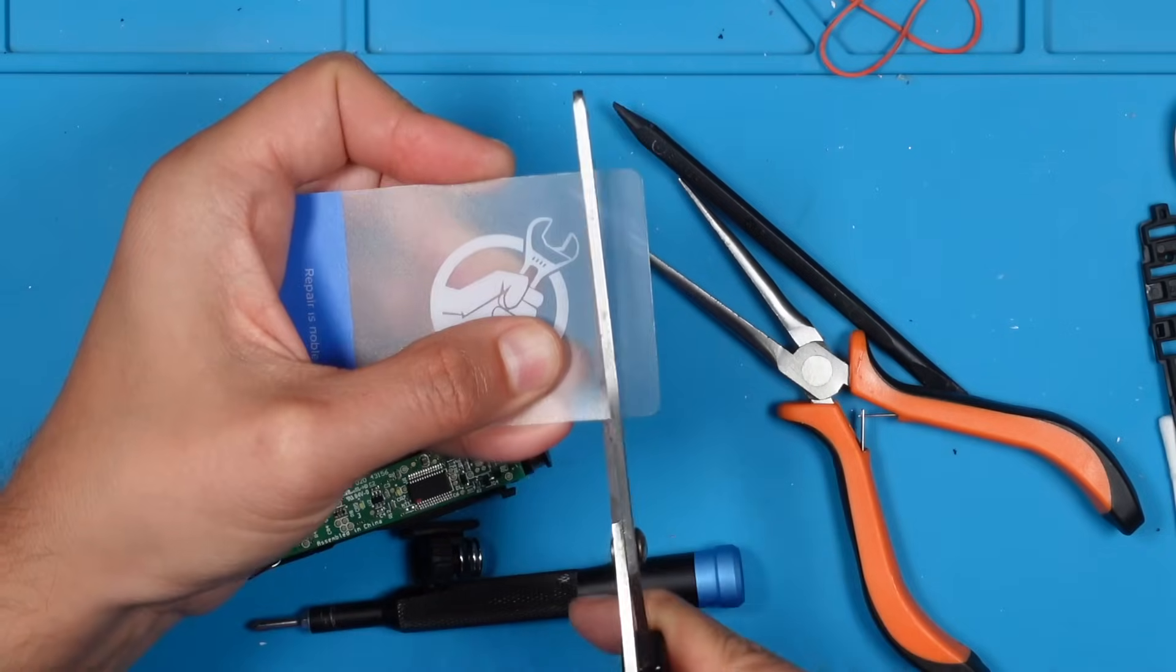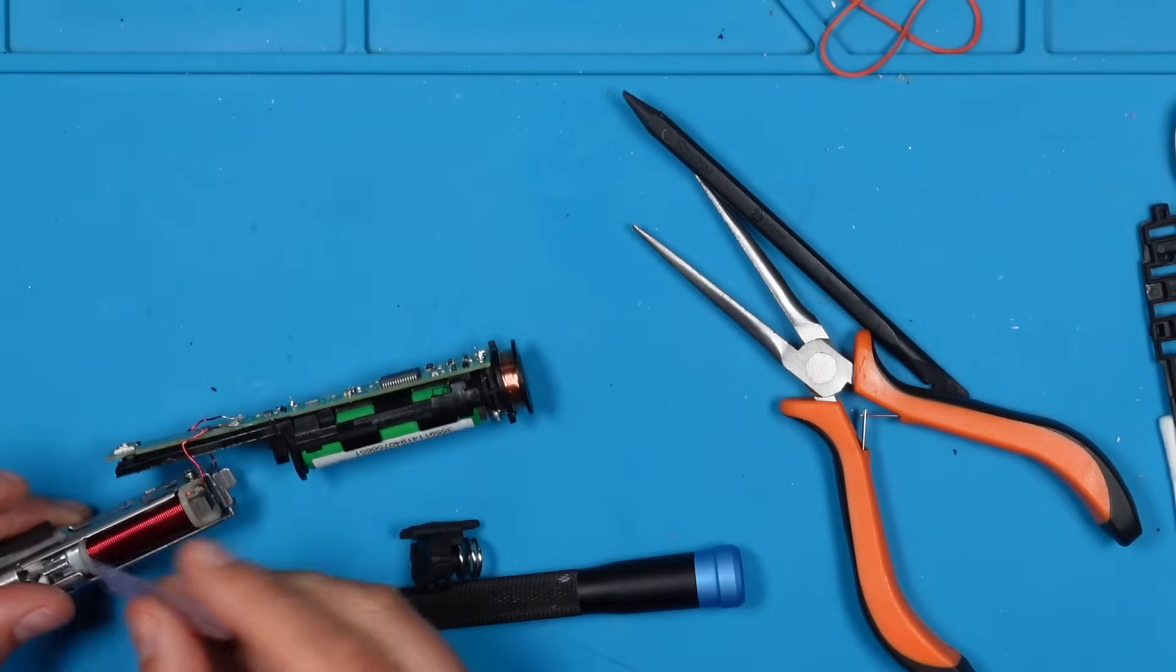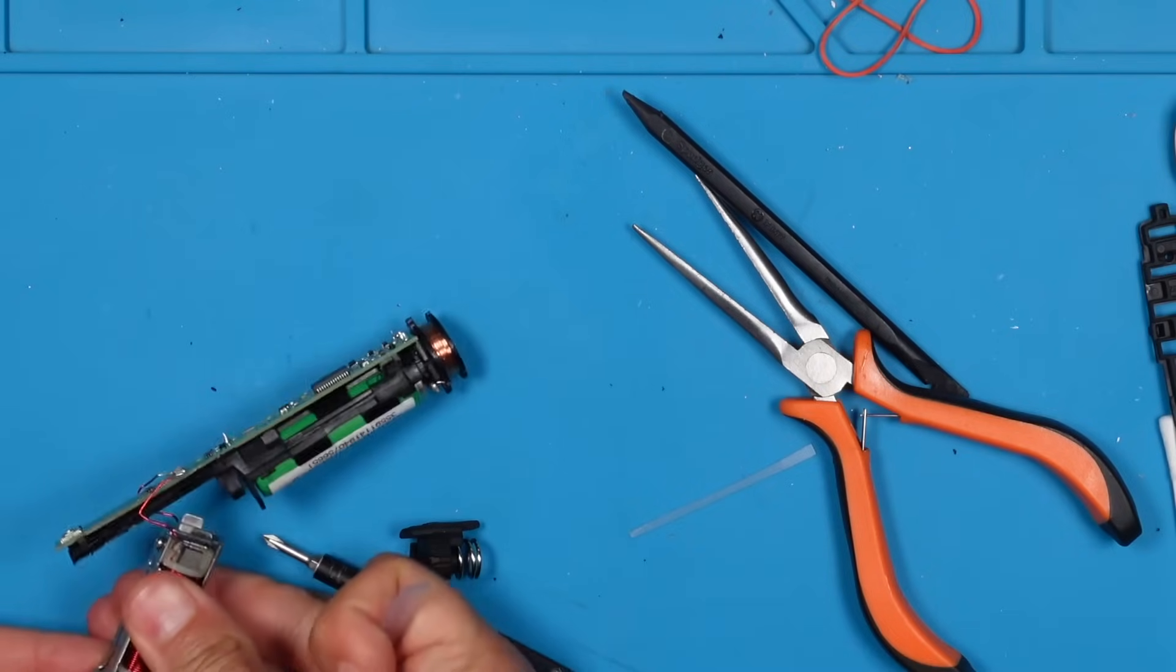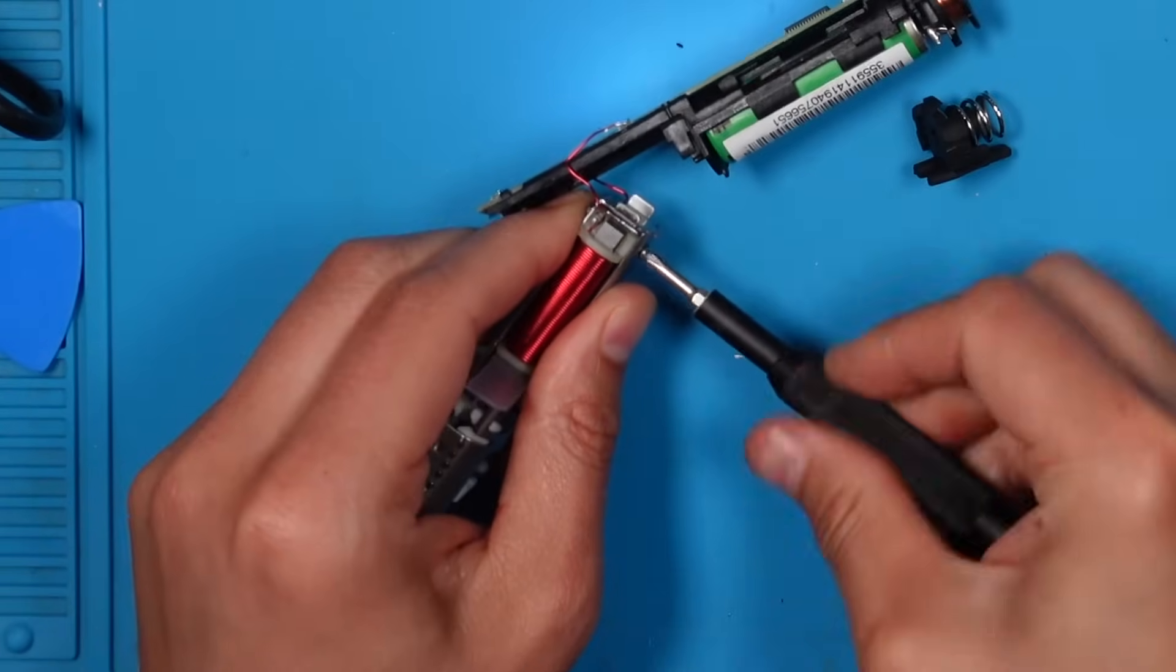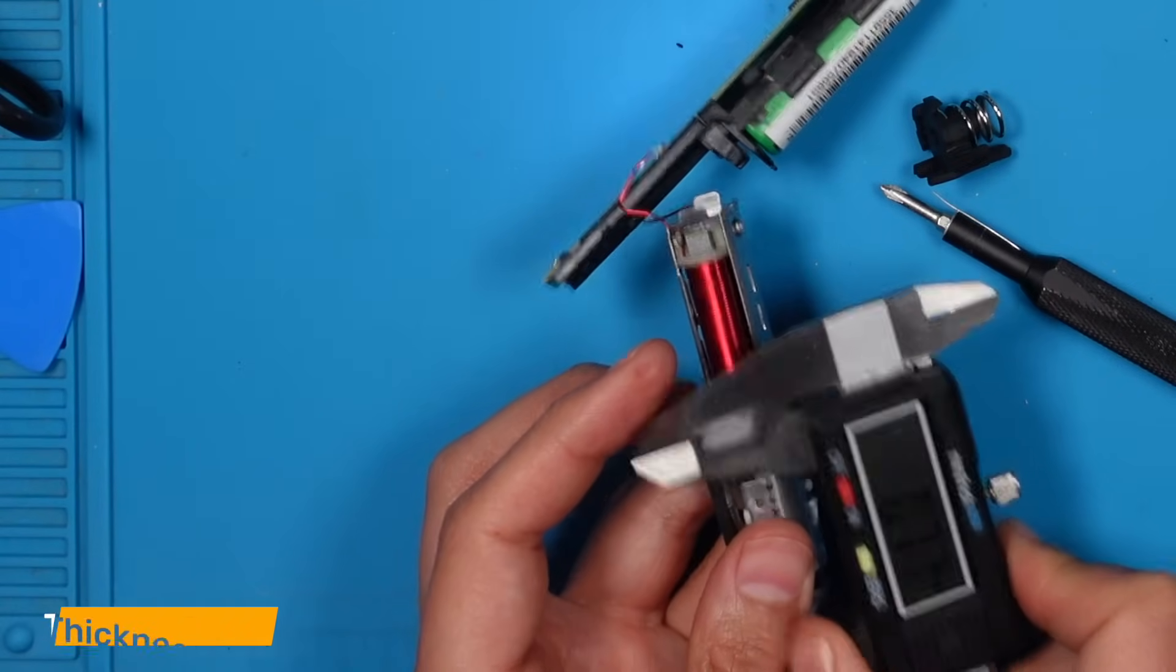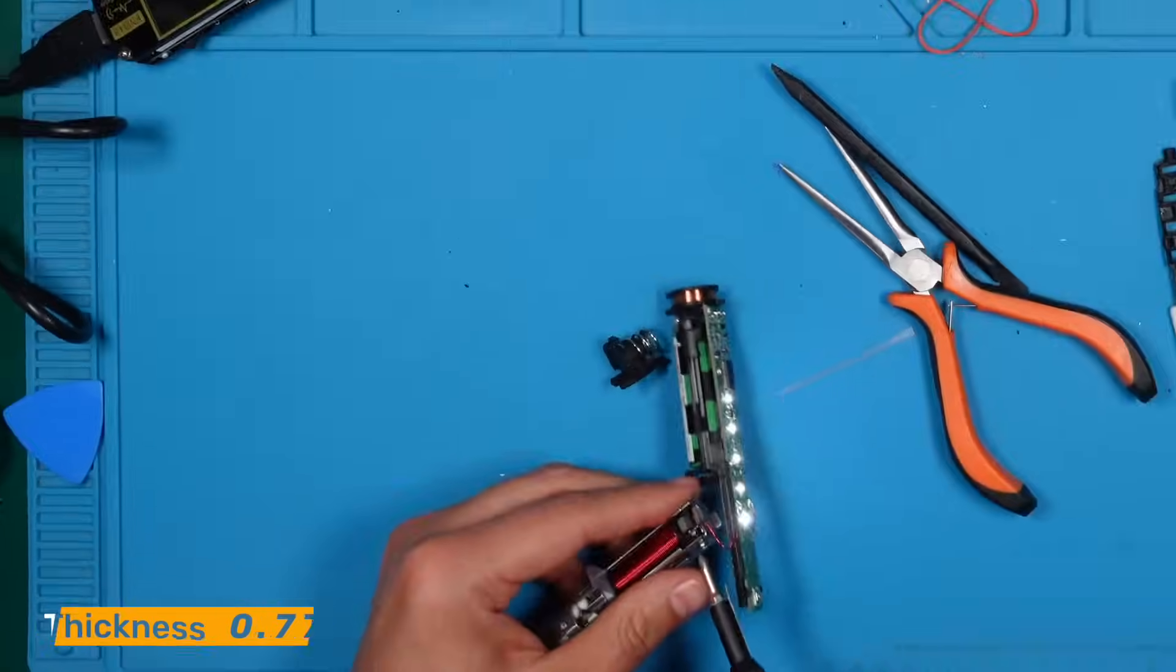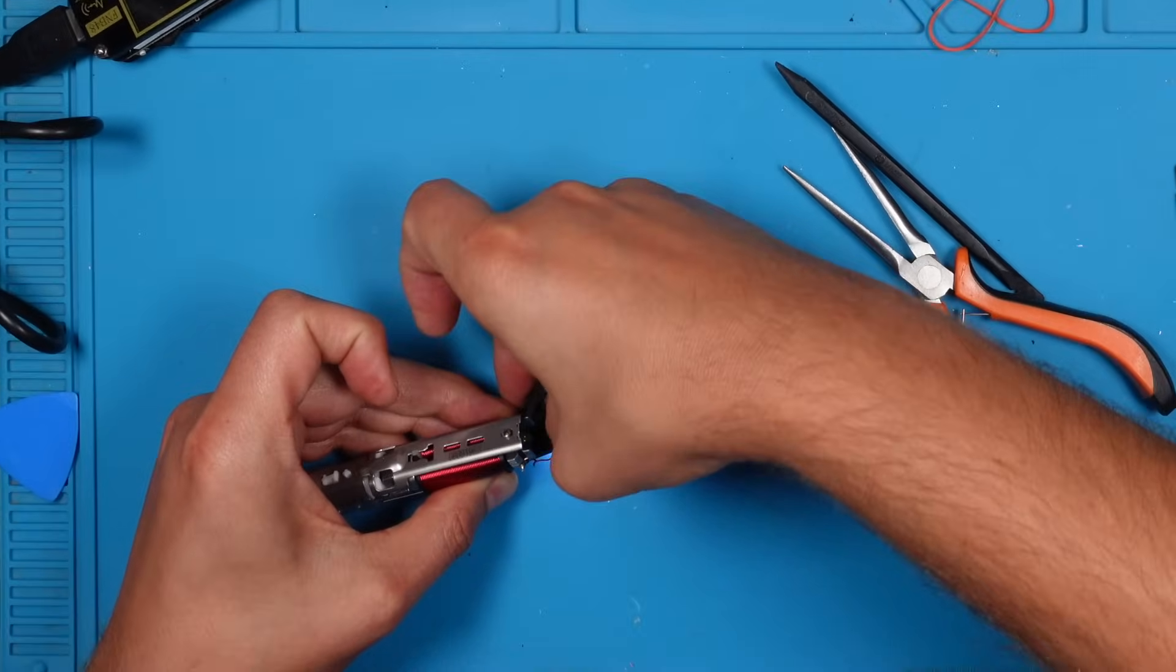Instead of using several layers of the flimsy nickel strip, we will now cut a strip out of this card. It has the same thickness as a regular credit card. Place it in between and tighten both screws as much as possible. By the way, the thickness of the card is 0.77 mm. Both screws are now very tight. Let's put it back together.